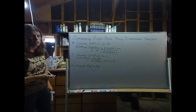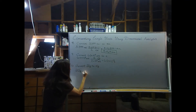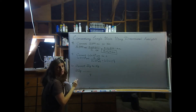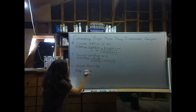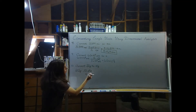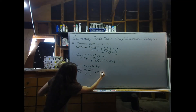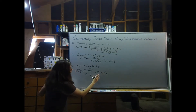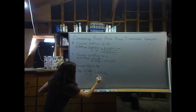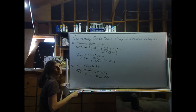Next, grams to decigrams. Start with 22 grams, put grams in the bottom so it cancels, and decigrams on top. Decigrams is smaller — there are 10 decigrams in 1 gram. Grams cancel, leaving decigrams. 22 times 10 gives 220 decigrams, which has two sig figs. If you want it clearer, write 2.2 times 10 to the second decigrams — then there's no doubt you only have two sig figs.